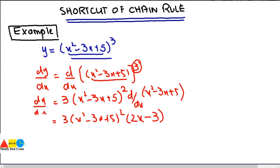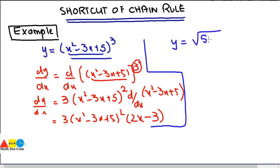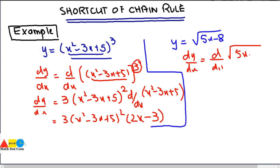Let's look at a square root function: y = √(5x - 8). This is also a composite function, and normally you would need the chain rule. Using the shortcut, write d/dx of √(5x - 8). Rewrite the square root as the power 1/2, so we have d/dx of (5x - 8)^(1/2).